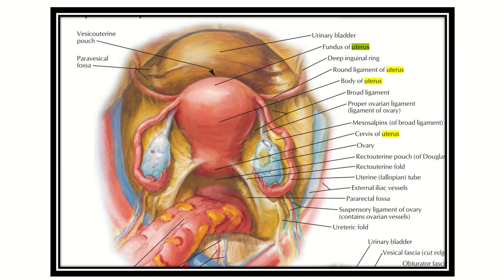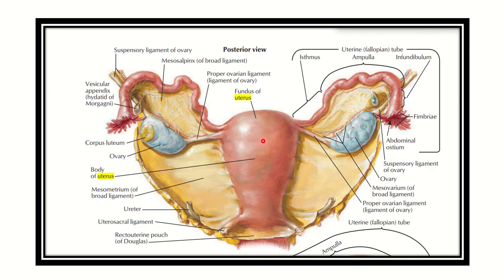In this picture we can see more detail about the uterus and related structures. The upper part is the fundus, the middle part is the body, and the lower part is the cervix. We can also see other structures such as the fallopian tube and the ovary — these are the main female internal genital structures.